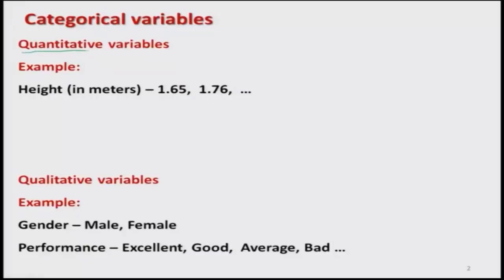The first question is: what is a factor? But before that, we need to understand some background. There are different types of variables, and in particular when we are talking in terms of statistics, there are two types of variables: quantitative variables and qualitative variables. Variables are those on which we try to collect data or numerical values.